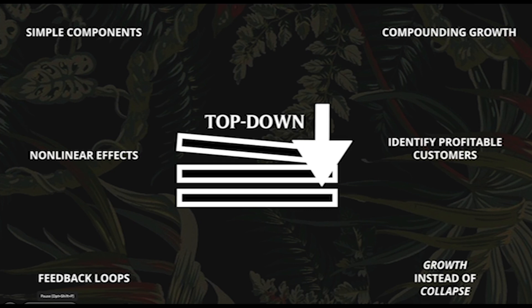When we talk about simple components, the system itself is extremely simple — no overly complex automations. The three stages we'll cover in the following videos are themselves quite simple, and that's where you get compounding growth: simple building blocks stacked on top of each other. It also allows you to see the positive non-linear effects in your database — identifying where your profitable customers are and doubling down on them to expand their lifetime value. Finally, by basing the strategy on strong engagement, retention, and conversion, you make sure the system has feedback loops that lead to more growth instead of collapse.